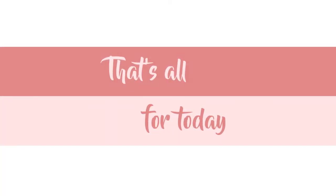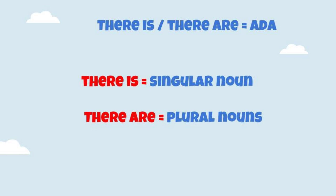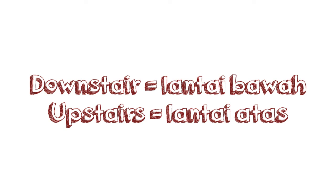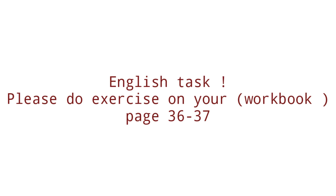Okay friends, that's all for today. And please remember this: 'There is' and 'there are' artinya ada. 'There is' is for singular nouns — kata benda yang jumlahnya hanya satu. And 'there are' is for plural nouns — kata benda yang jumlahnya lebih dari satu. Behind — di belakang. In front of — di depan. Downstairs — lantai bawah. Upstairs — lantai atas.